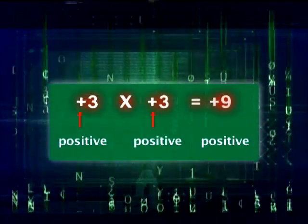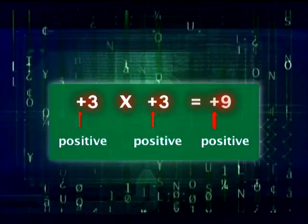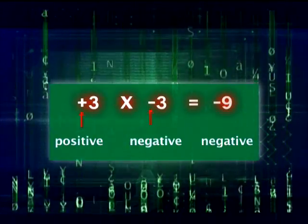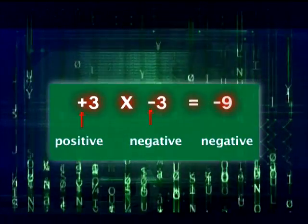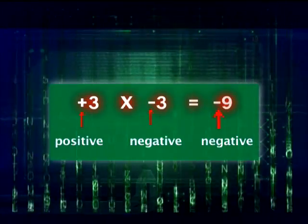Multiply the same signs, the product is positive. Different signs, different types of lines, the product is negative.